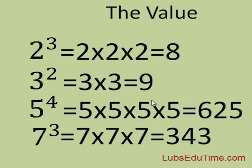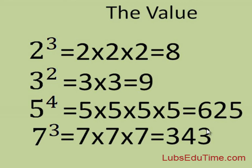5 times 5 is 25, and 25 times 25 is 625 — that is 5 to the power 4. 7 to the power 3 is 7 times 7 times 7, not 7 times 3. 7 times 7 is 49, and 49 times 7 is 343.